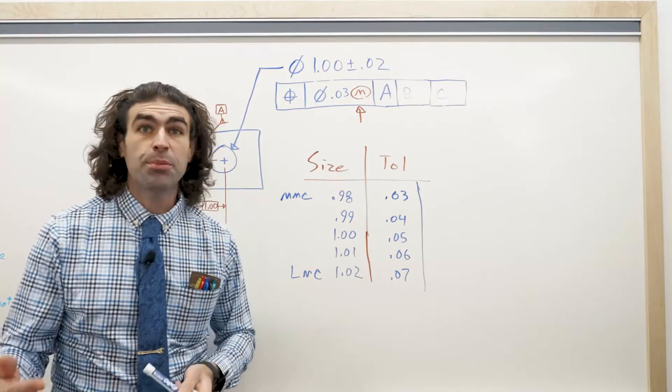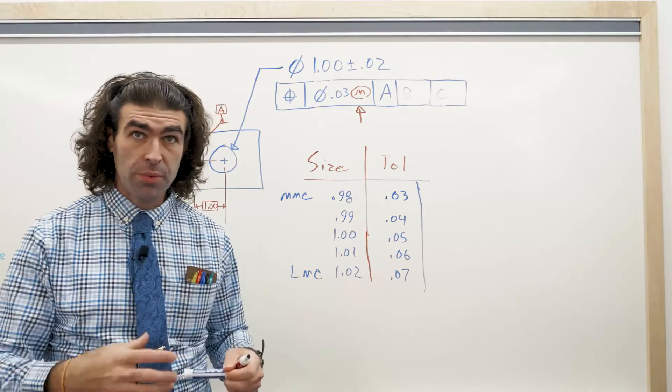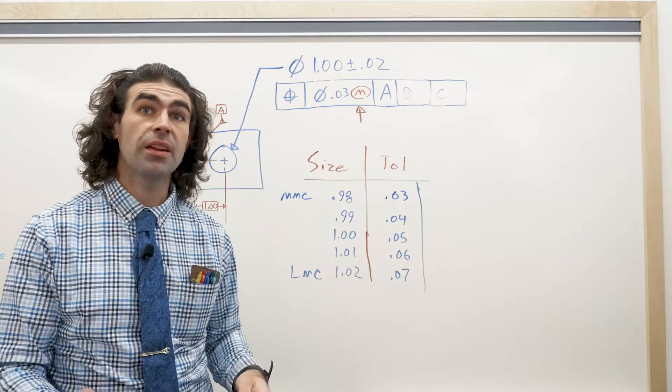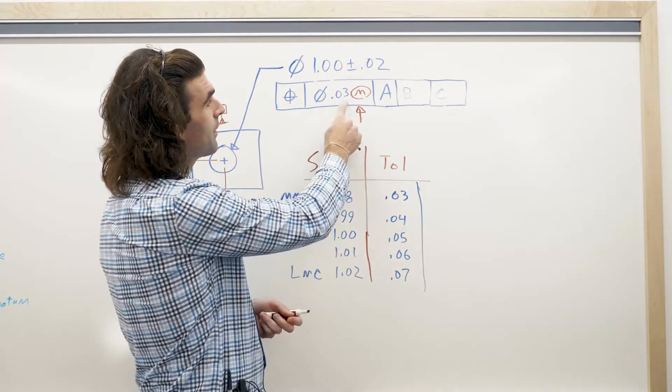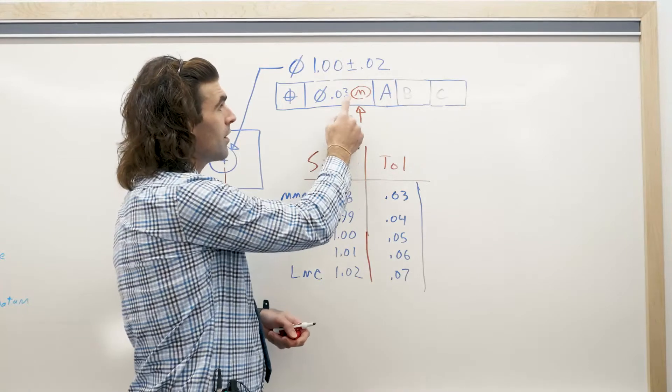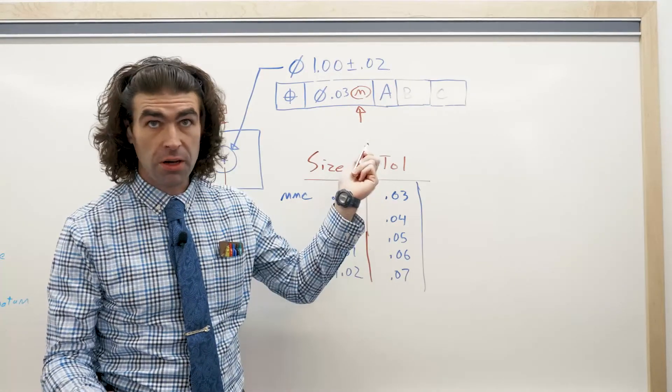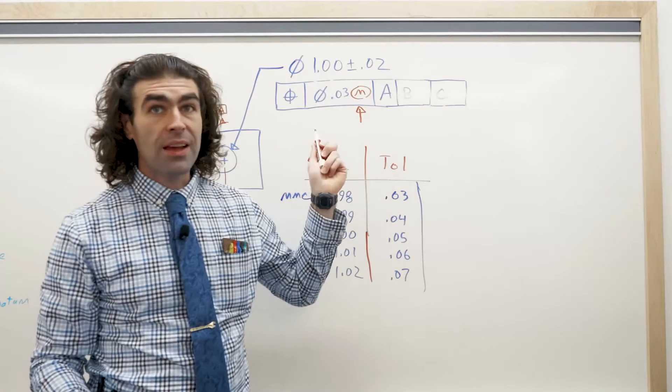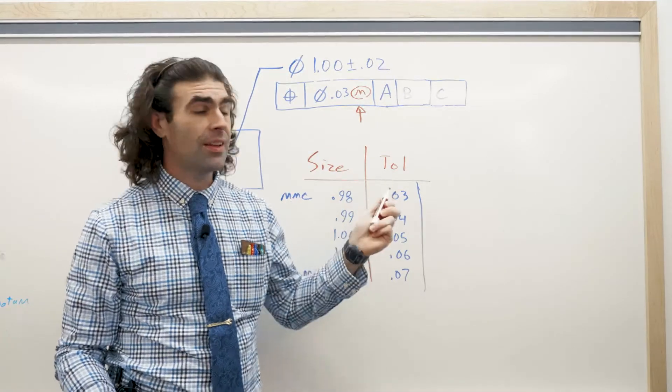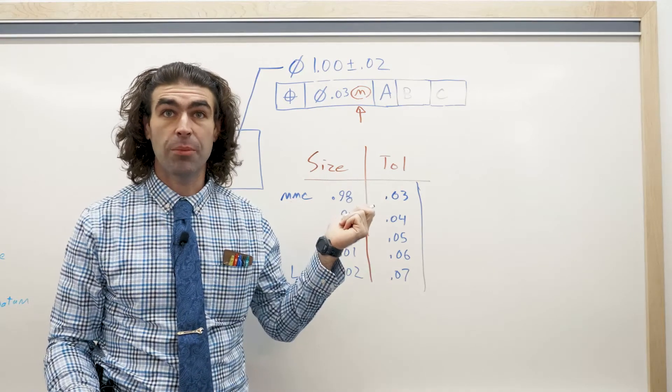So, what happens is, in inspection, they're going to measure the diameter of positional variation. They're going to get a number. If it's less than this, case closed. They're not worried about it. If it's more than this, they'll figure out what the size is. I mean, they should already know, right? They'll figure out the size, calculate the bonus tolerance, and then see if there's enough allowable tolerance to let the part pass.